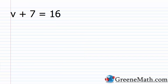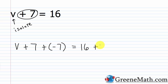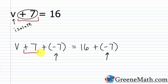Let's look at v plus 7 equals 16. I want to isolate the variable v. I'm adding 7 over here, so I need to get rid of that by adding the opposite of 7 — which is negative 7 — to both sides of the equation. So v plus 7 plus negative 7 equals 16 plus negative 7. That's because if I add a number and its opposite, I get 0, leaving v by itself.